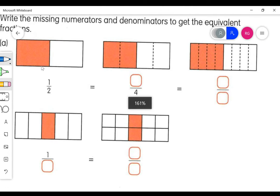For A, we have one half. For this missing numerator here, we should write two fourths. And then for this one, looks like four is my numerator and eight is my denominator.